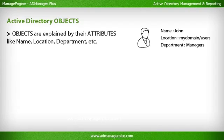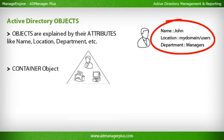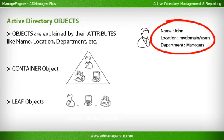Objects are explained by their attributes like name, location, department, etc. Container objects can contain other objects like users, computers, OUs, etc. Leaf objects cannot contain other objects — for example, users, computers, etc.